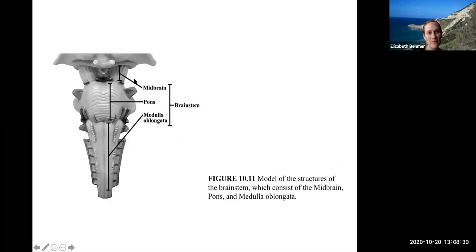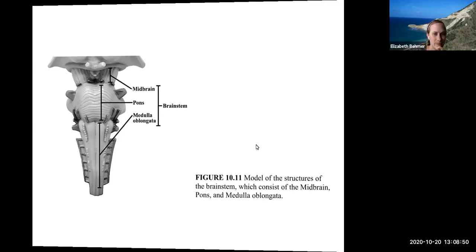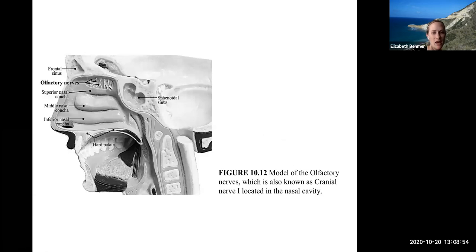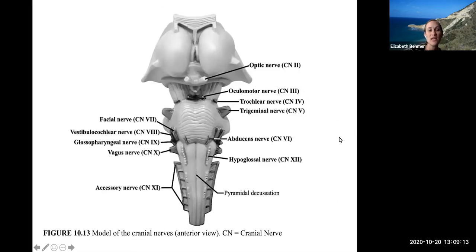Here's the brain stem. The midbrain is directly connected to the cerebrum. It kind of holds up the brain, we call it. Here's your pons, and then the medulla oblongata is the part below the pons. Here's the model of the olfactory nerves. It's cranial nerve number one. It's located in the nasal cavity because it'll have branches off of it. These olfactory nerves that come through the cribriform plate in your ethmoid bone to reach into your nasal cavity to help with olfaction or smelling.